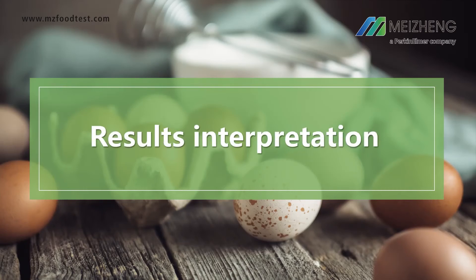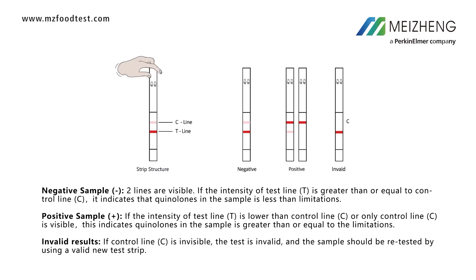Results interpretation. Negative sample: two lines are visible. If the intensity of the test line is greater than or equal to the control line, it indicates that quinolones in the sample are below the limit. Positive sample: if the intensity of the test line is lower than the control line, or only the control line is visible, this indicates quinolones in the sample are greater than or equal to the limit.